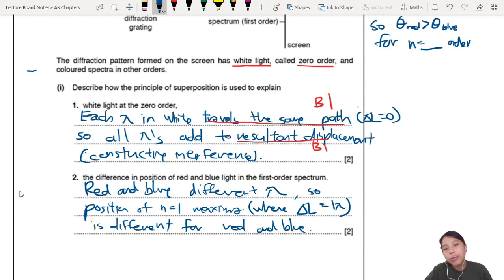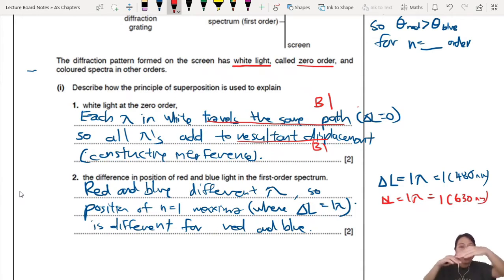Because there are different wavelengths, so their path difference one λ can be different values. It's different for red and blue light. Because of red color, one λ may be different than the blue color's one λ. So blue color, your one λ may be one times 480 nanometer. Then you go to your red color, the path difference they need for constructive interference will be one times, let's say 630 nanometer. Different really, your value will be different. You need a different path difference.